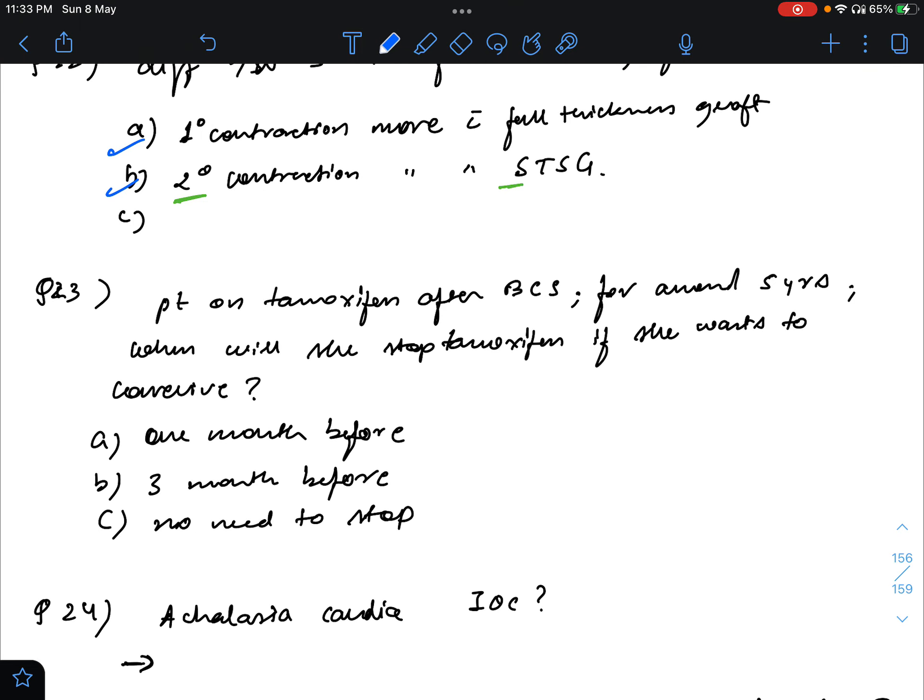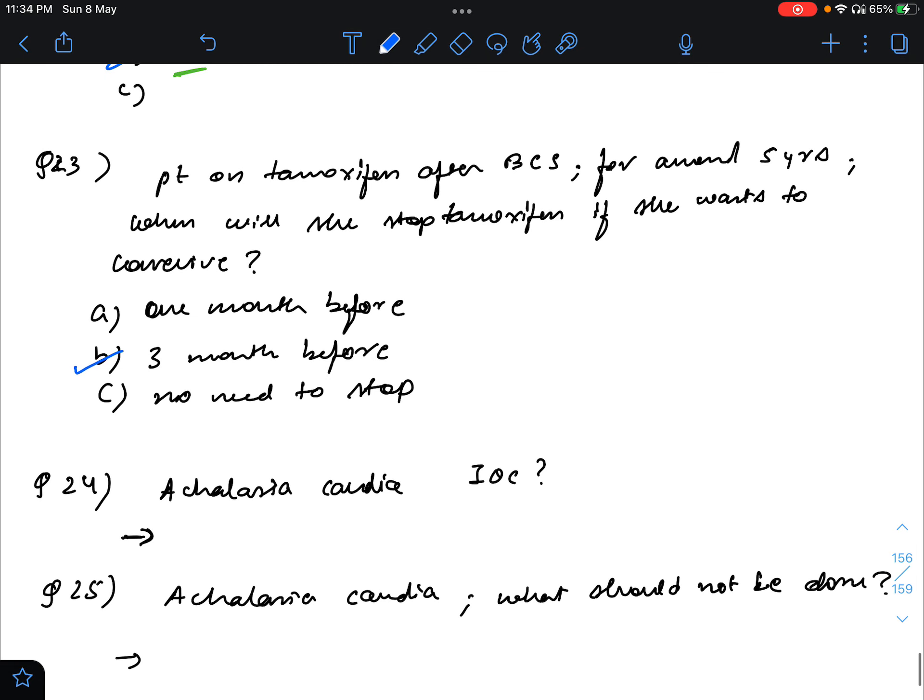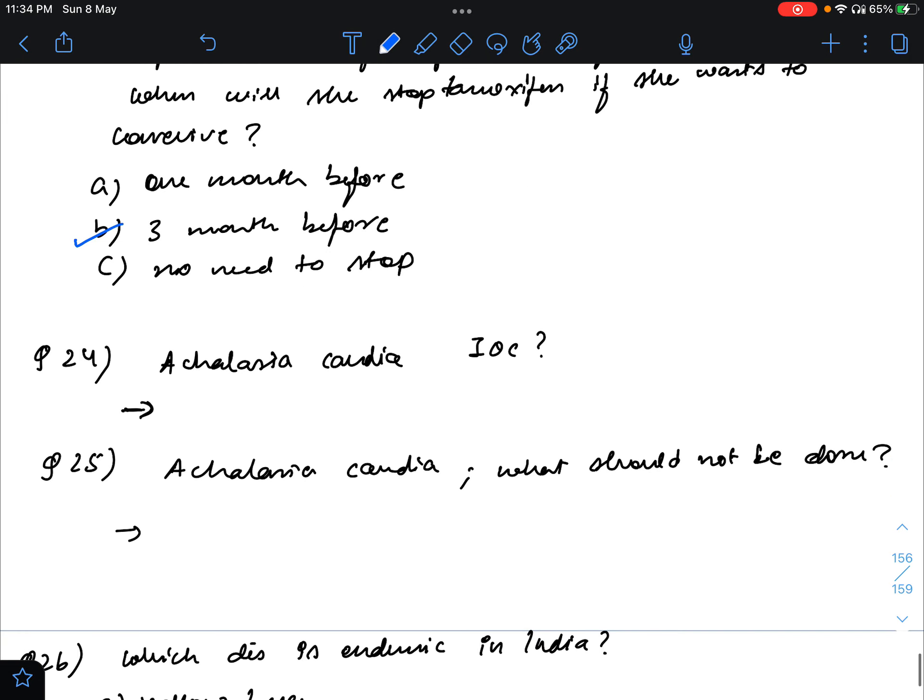Next question: patient on tamoxifen after BCS for around five years, when will she stop tamoxifen if she wants to conceive? So this is kind of a controversial question. Some people are saying that there is no need to stop. But as far as I know, some teachers have told that it should be stopped at least three months before because there is a risk of endometrial carcinoma with tamoxifen. So it should be stopped. I think this is a better answer.